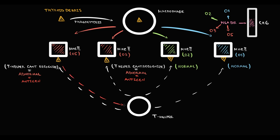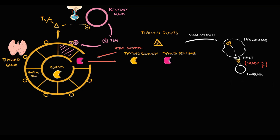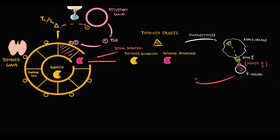In response to any antigen, T-helpers immediately become activated, subsequently inducing activation of B-lymphocytes — which begin to produce antibodies — and also activating T-killers. So in individuals with HLA-DR3 and HLA-DR5 alleles, the MHC2 receptor presents thyroid debris abnormally, T-helpers recognize it as antigen, become activated, and then induce B-lymphocyte activation, which leads to antibody production.